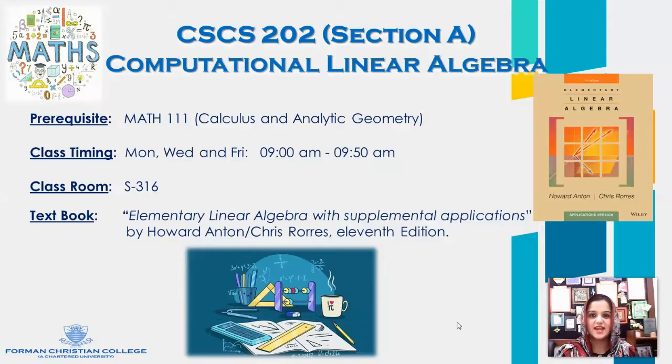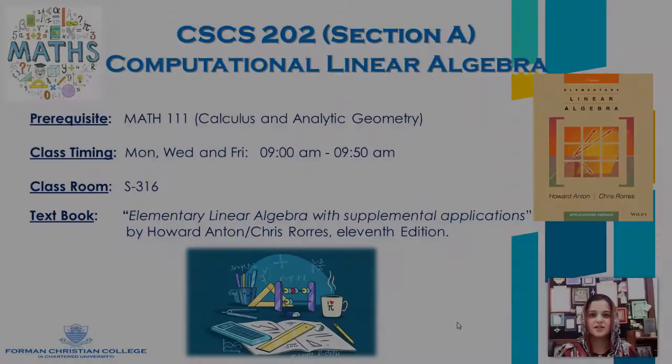This is a compulsory and supporting course for computer science major students. It is the prerequisite of many elective courses of computer science majors, like introduction to digital image processing, computer graphics, computer vision, and machine learning. The prerequisite of this course is Math 111, Calculus and Analytic Geometry.